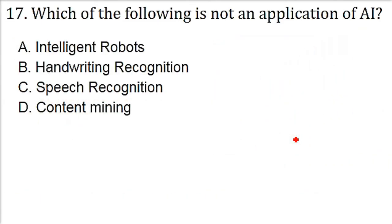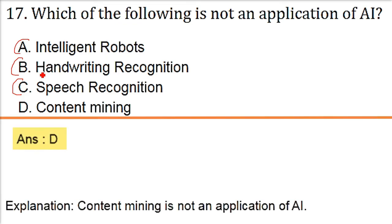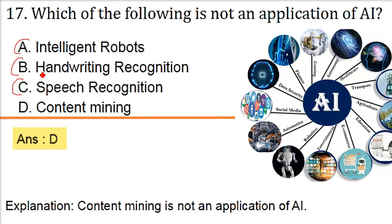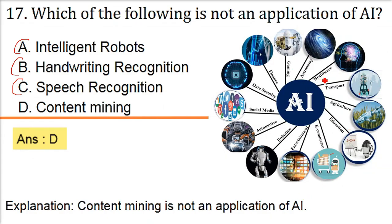Which of the following is not an application of AI? It is not an application of AI. See, intelligent robots, handwriting recognitions, speech recognitions are there. But what about content mining? Right now, it is not an application. So all these are the present application. But if an intelligent people, a person like you, they want to go in this field, applying the AI, it can be.